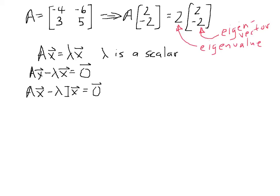And then at that point we can factor the vector x out. And so we have A minus lambda I times x equals the 0 vector.